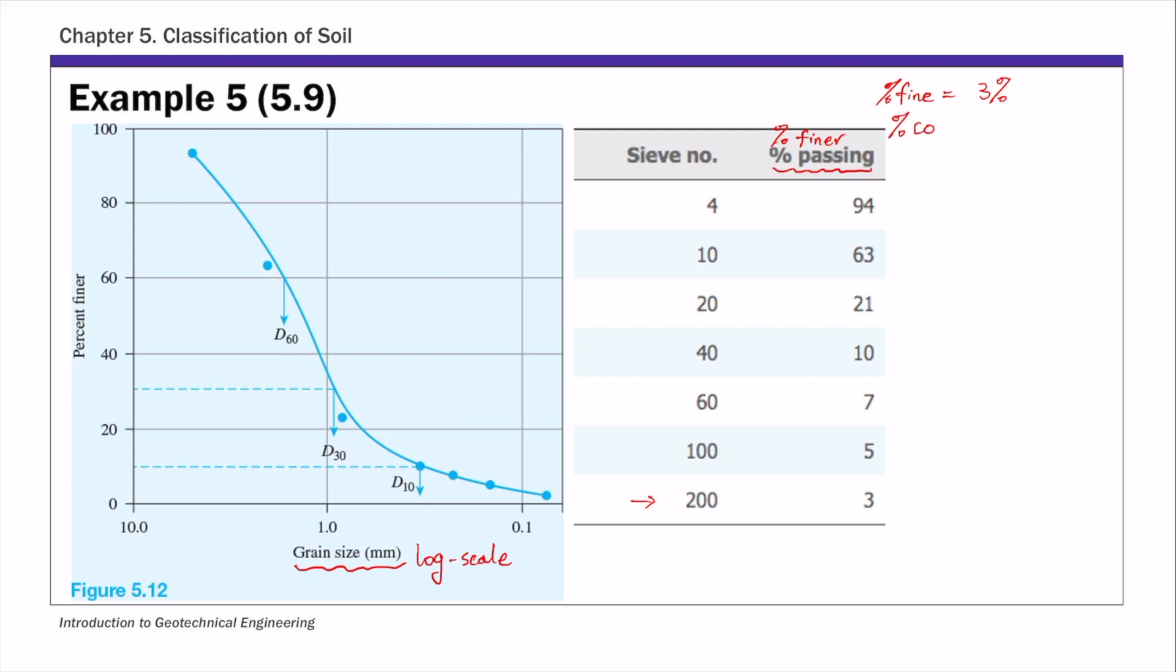Then percent of coarse is 100 percent minus 3 percent, so this is 97 percent. And then percent of gravel - gravel is anything retained on or above number 4 sieve. Number 4 sieve opening is 4.75 millimeter, and number 200 is 0.075 millimeter. So gravel is anything larger than 4.75, anything retained above number 4 sieve.